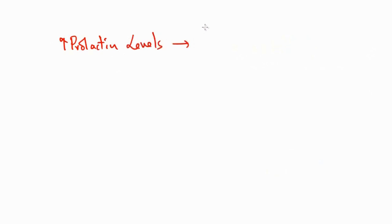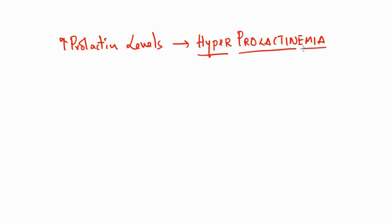Now, if your test results show increased prolactin levels, what are the different things you need to think about? Increased prolactin levels is called hyperprolactinemia — 'hyper' meaning increased, and 'emia' meaning presence in the blood. So what are the different causes to evaluate in a patient with hyperprolactinemia?